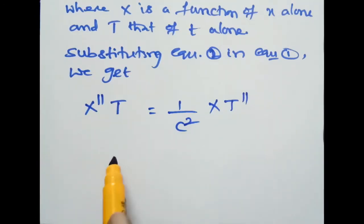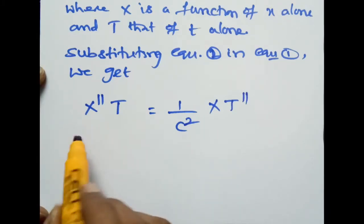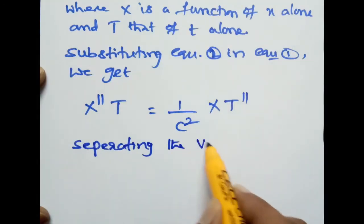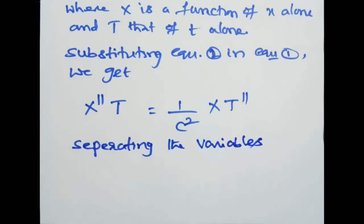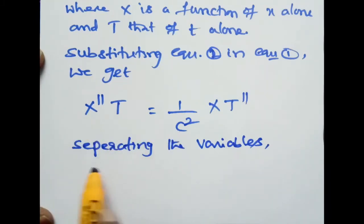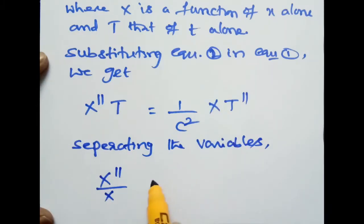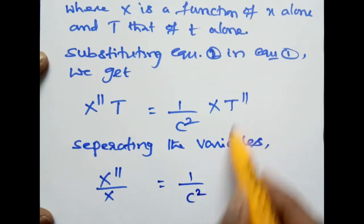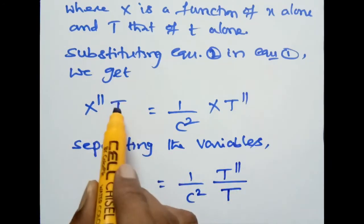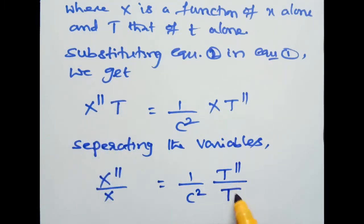Now X'' · T = (1/c²) · X · T''. Separating the variables — since we are finding the solution by the method of separation of variables, we write x variables on one side and t variables on the other side. Therefore X''/X = (1/c²) · T''/T. Say this is equation number 3.